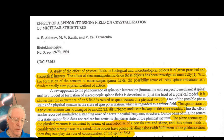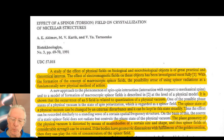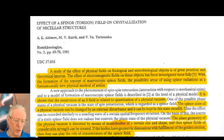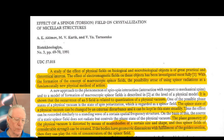The torsion state of the ether can be changed by an external disturbance and kept in this state steadily. Thus the effect can be recorded similarly to a standing wave of a certain spatial frequency structure. The source of a static torsion field does not radiate, but controls the phase state of the physical vacuum, or ether. The plane geometry of the ether is distorted by means of macro bodies or objects of a certain size and shape, and thus torsion fields of considerable strength can be created. And if these bodies have geometric dimensions fulfilling the golden section, then they can play the role of concentrators of the torsion field.